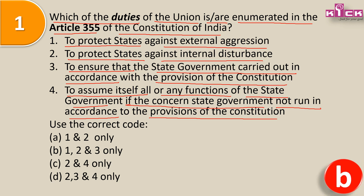The answer is B - 1, 2 and 3 only. External aggression means कोई बाहर से आक्रमण हो रहा है; internal disturbance means आंतरिक कुछ गड़बड़ी हो रही है, कुछ disturbance हो रहा है - इससे directly protect करना है। यह responsibility of the Union है, why? Because the Union is a big brother and the federation को protect करने का पूरा जिम्मा Union पर है। It is a constitutional duty.